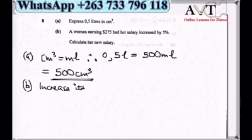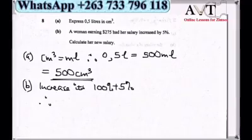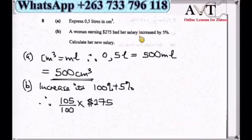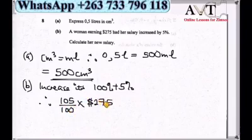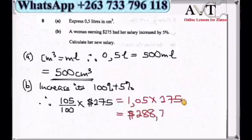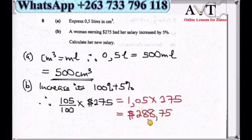Part B: a woman earning $275 a day has her salary increased by 5 percent. We add 5 percent to the salary: 105 over 100 times 275, which is 1.05 times 275. Using decimal multiplication without a calculator, this gives $288.75.